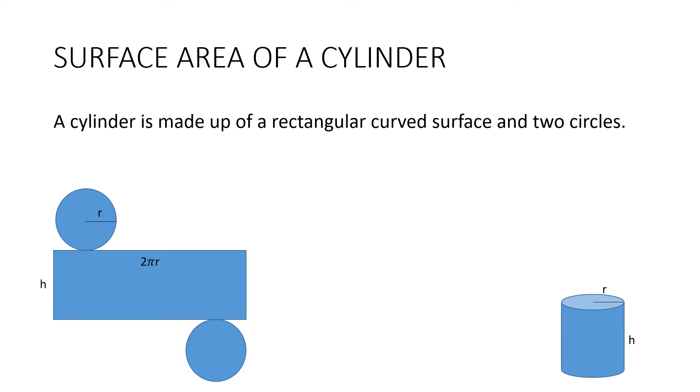So we can work out the area of the curved surface by just multiplying these two numbers. And we already know the area of a circle. So here's the formula for the surface area of a cylinder. You can see that this part here is the curved surface, and this part here is the two circles.